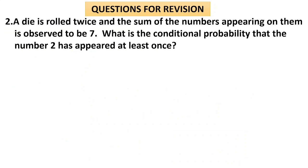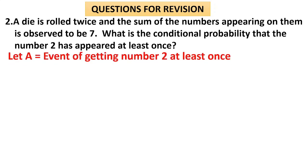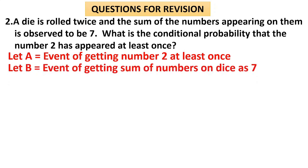Question 2: Here we identify the sample space, event space, A∩B, and the probability. A die is rolled twice and the sum of the numbers appearing is observed to be seven. The total sample space has 36 outcomes. The sum being seven is taken as the event already occurred. Find the conditional probability that the number 2 has appeared at least once. Call this event A, and event B as getting a sum of seven.